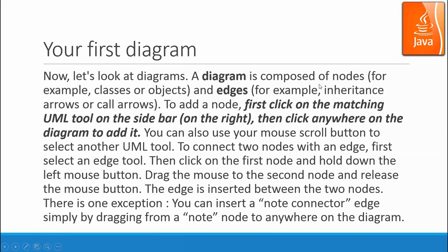A diagram is composed of nodes and edges. To add a node, you click on the matching UML tool on the right sidebar and then click anywhere in the diagram to edit. You can also use your mouse scroll button to select another UML tool. To connect two nodes with an edge, first select the edge tool and click on the first node, hold down the left mouse button, drag the mouse to the second node, and release. The edge is inserted between the two nodes.